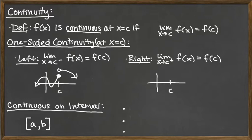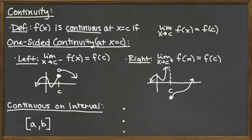In comparison, we could get something that is right continuous by having that solid dot attached to the right-hand side — perhaps the function goes off like this. We don't really care what's happening on the left, so we could even have a vertical asymptote from the left-hand side. That doesn't matter at all when talking about one-sided continuity. We look for the dot; that dot is attached to the right-hand side, so it would be right continuous.